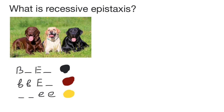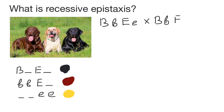Now let's imagine a double heterozygous black-colored dog whose genotype is going to be capital B, small b, capital E, small e (BbEe). And imagine that we cross it with another black-colored dog whose genotype is going to be the same — also double heterozygous BbEe. So parent one and parent two both have this genotype.